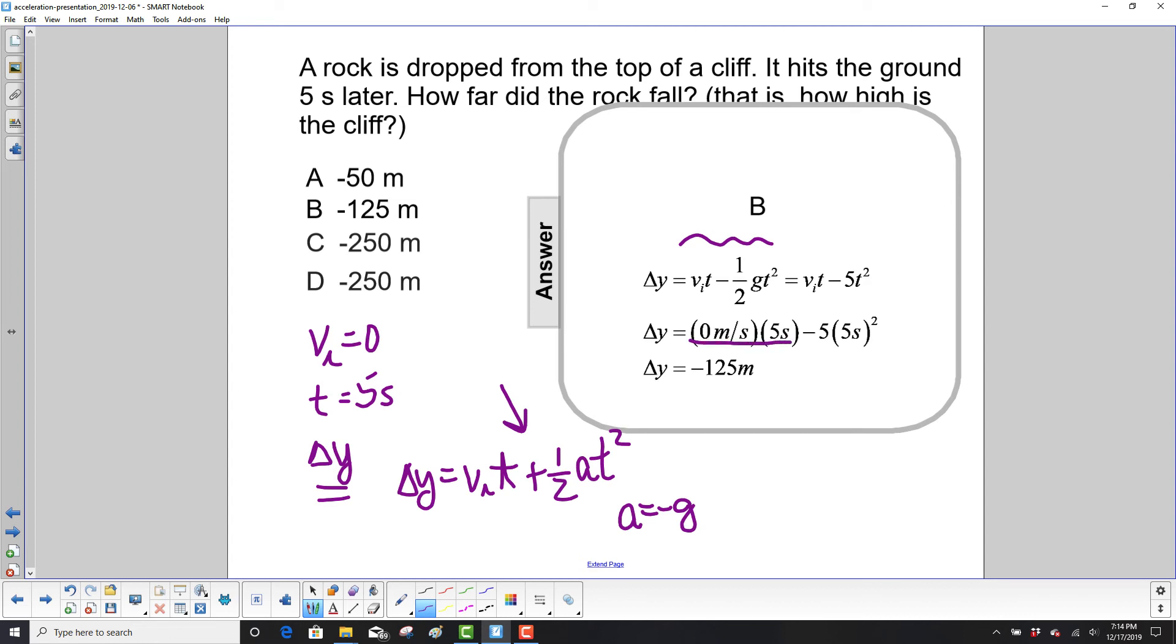Our initial velocity is zero, this term cancels out. We have this term minus 5 times the time squared. Make sure you square the time.